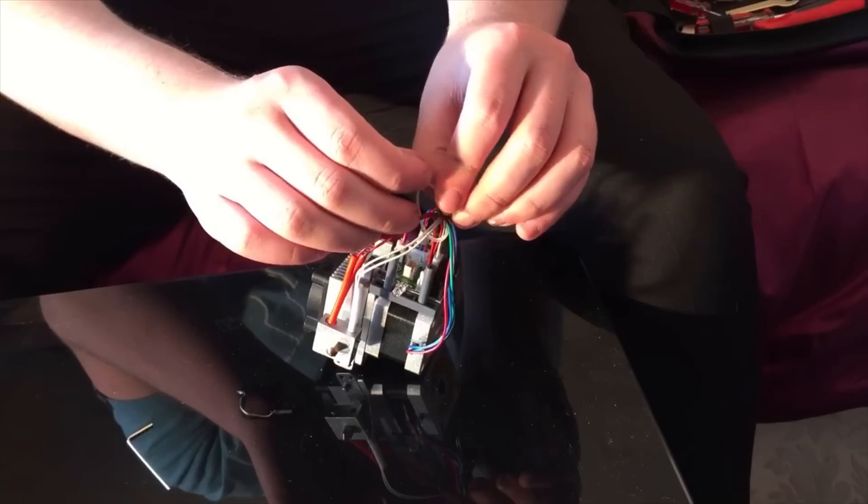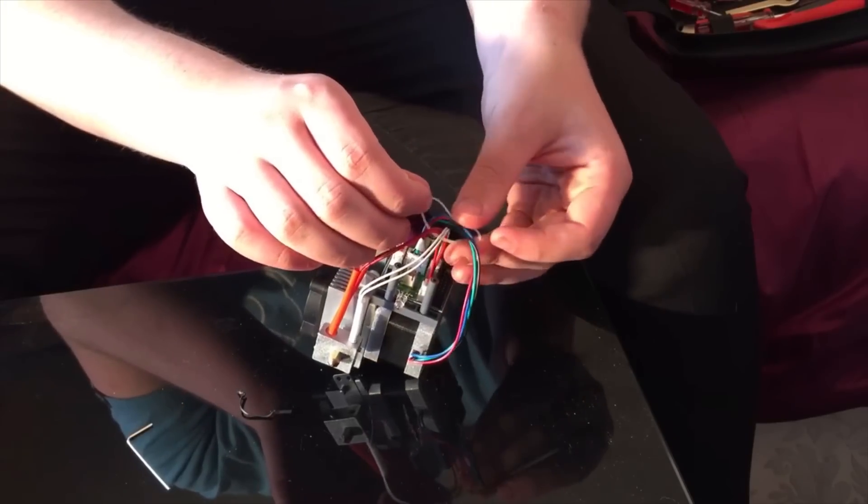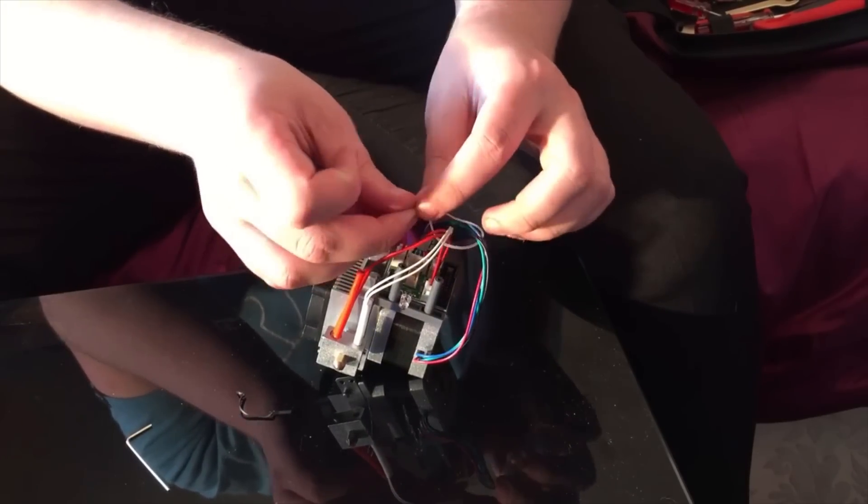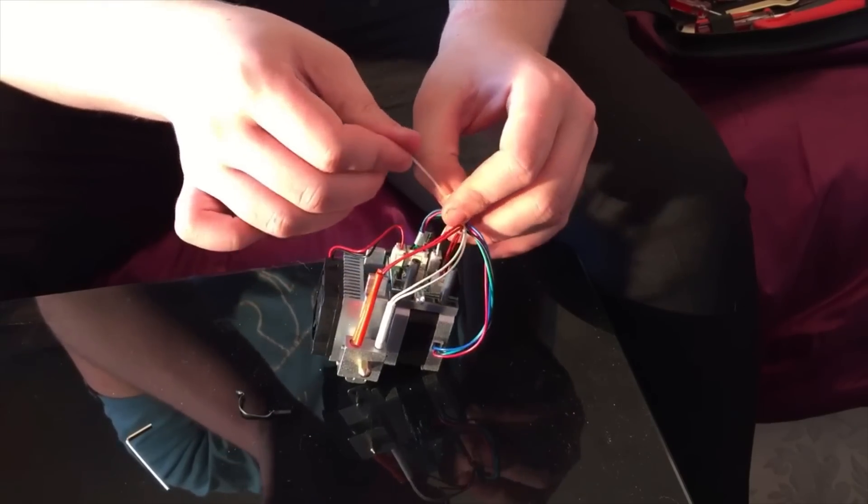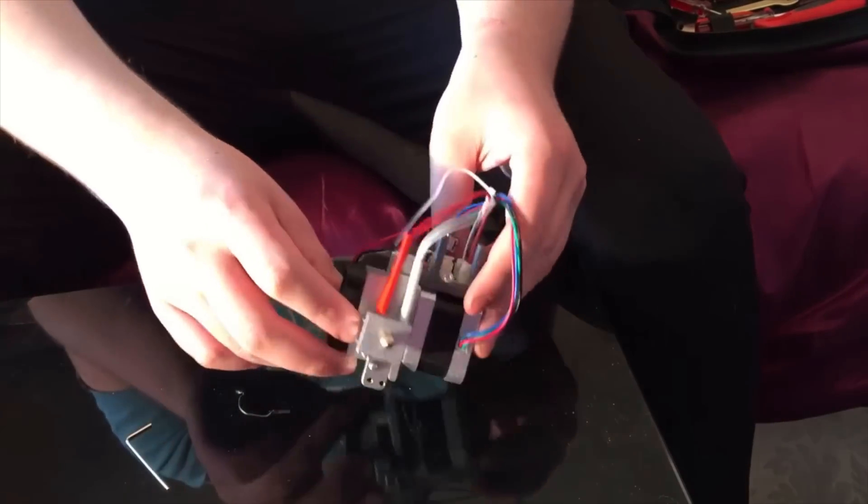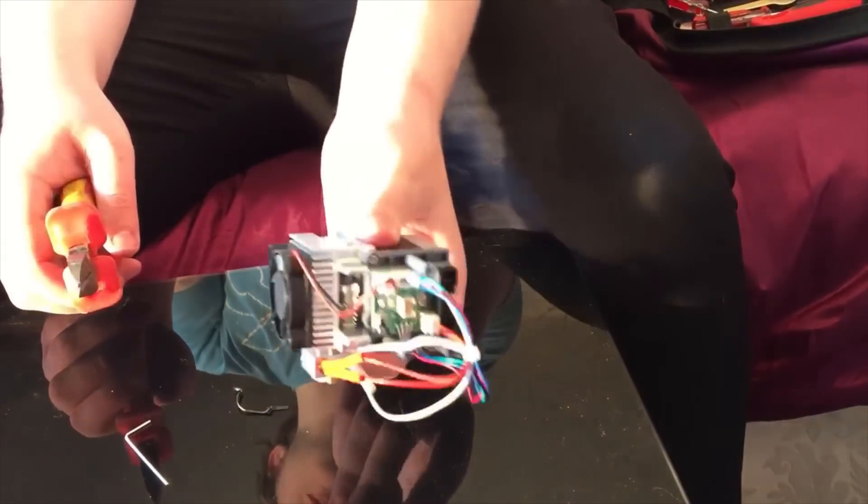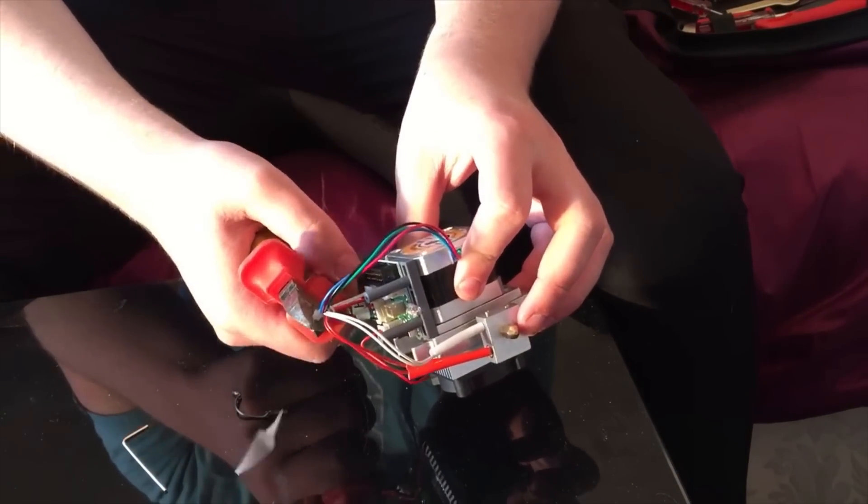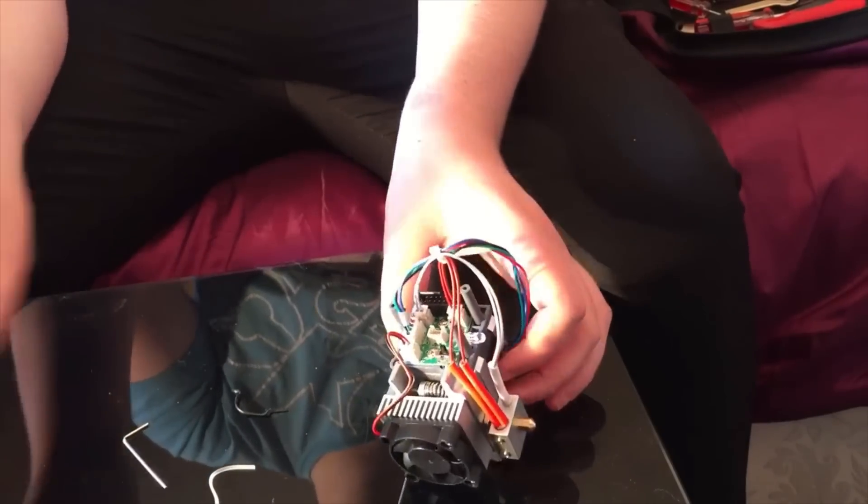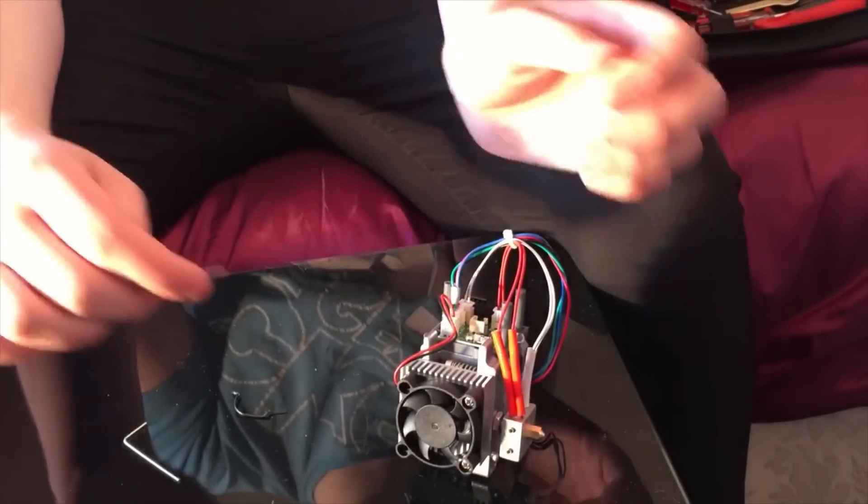And we're just going to attach the cable tie, just so. It keeps all the wires in one place and out of the way. There's nothing really there that can get in the way, is there? And then we're just going to use a bit of wire cutters just to cut that off. And that is the end of part 72. So we'll see you again in the next episode.